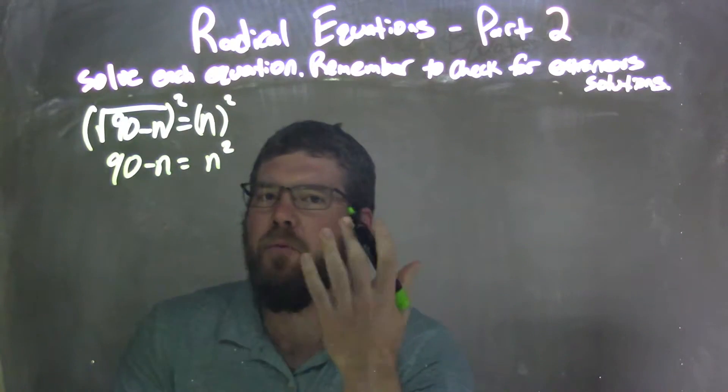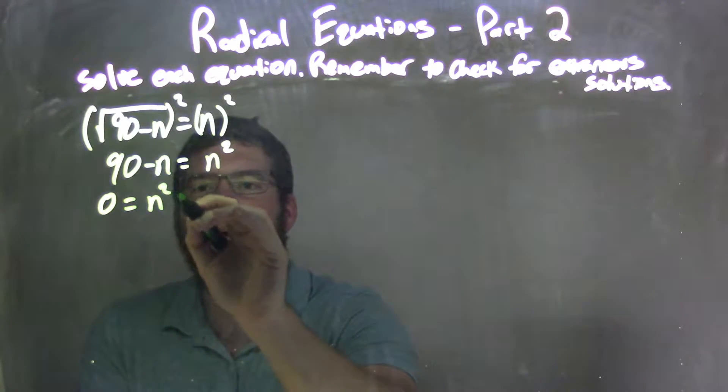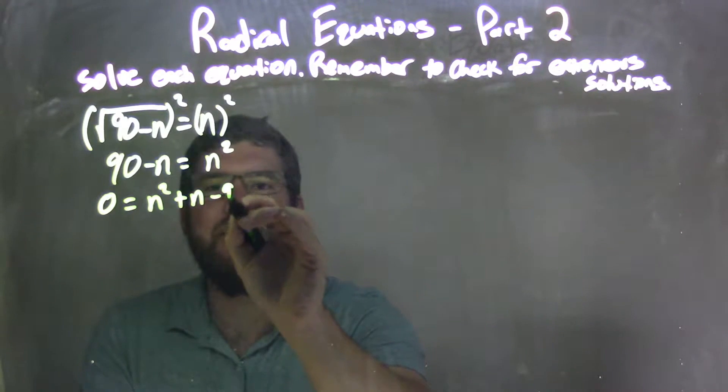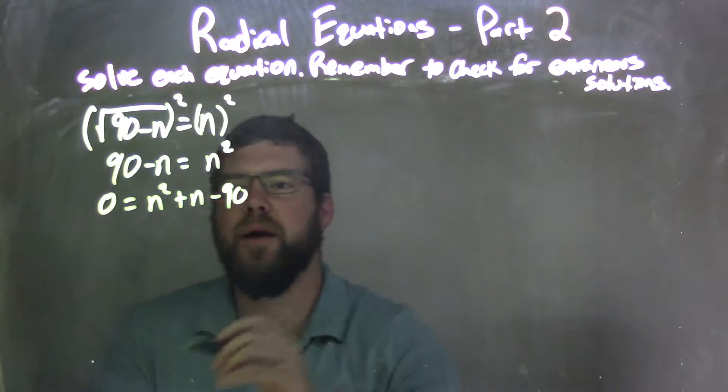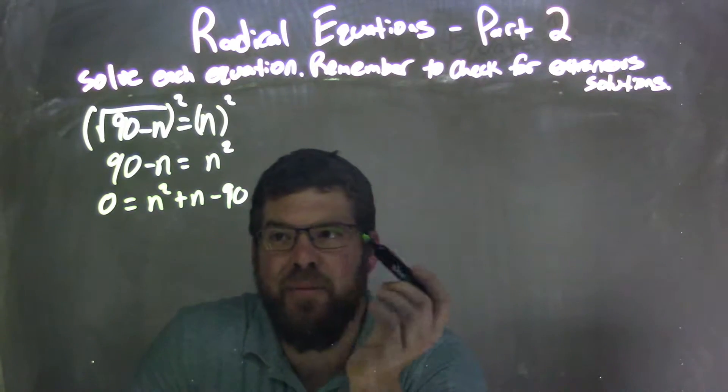Then from there, what I need to do is bring everything over to one side. So I'm up to 0 equals n squared plus n minus 90. So I subtracted 90 from both sides, I added n to both sides.